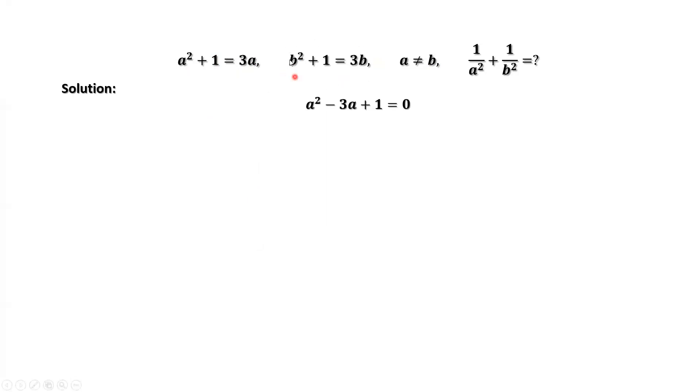From the second given condition, we move 3b to the left hand side, giving us b squared minus 3b plus 1 equals 0. This is the third condition: a does not equal to b.